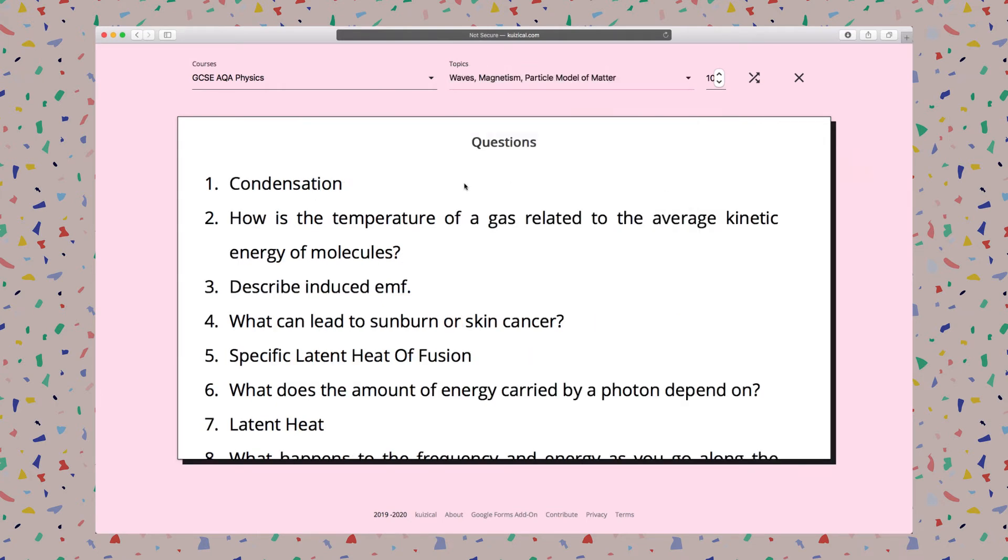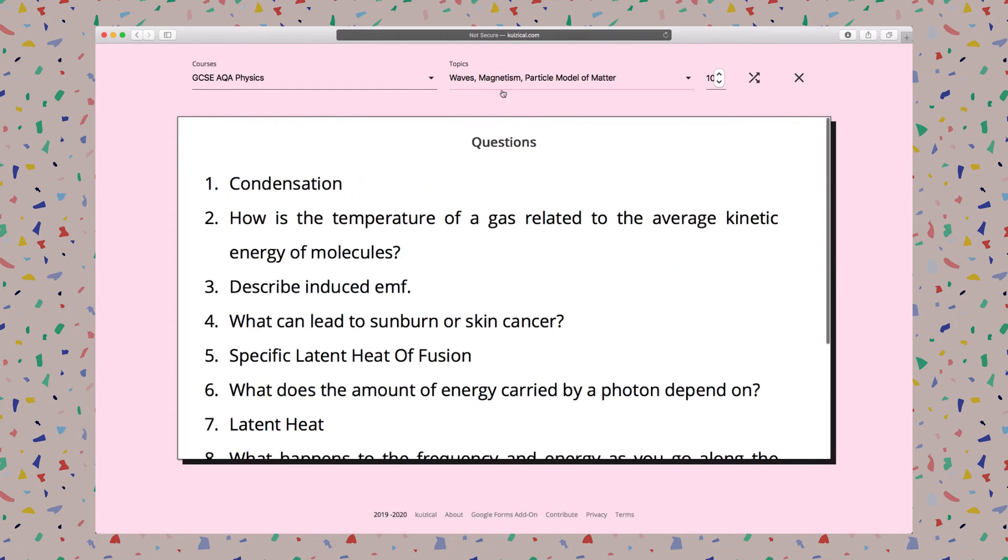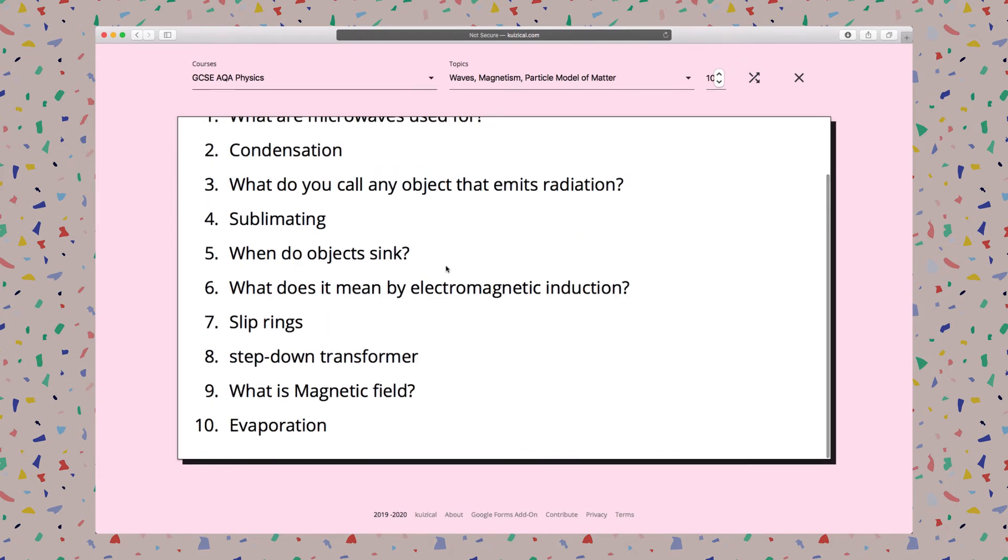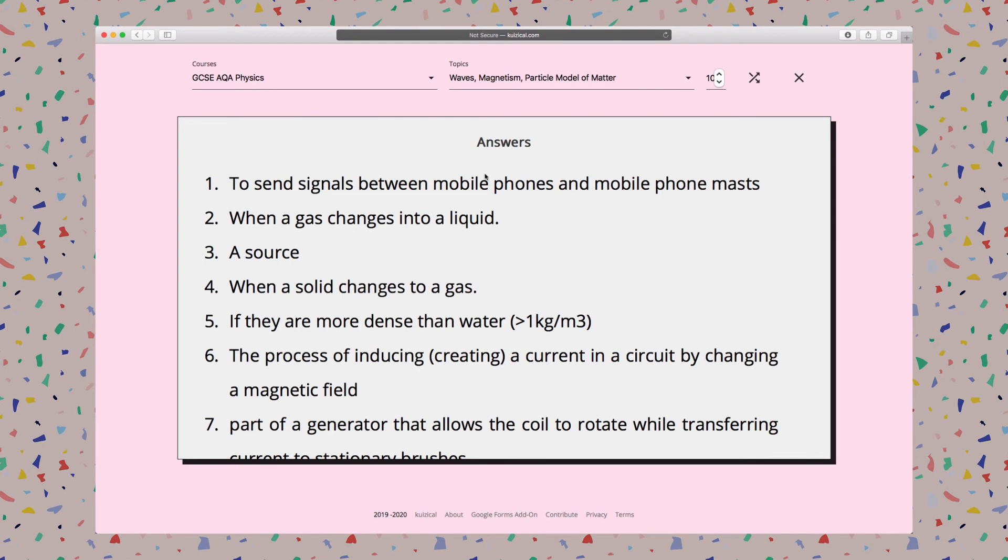These are all the questions available from those topics. I can shuffle them, and there they are. Again, I can click on it and then the answers are at the back.